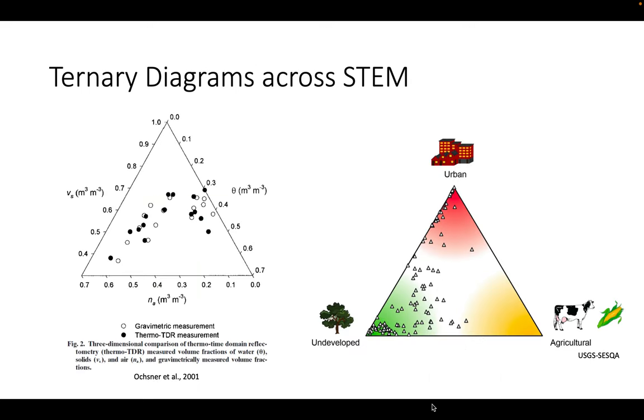Here are two examples that show the versatility of this diagram. The diagram on the left is actually from one of Dr. Ochsner's publications. This is clearly not for soil texture, but the ternary diagram maintains its base characteristics. There are three variables being plotted on an equilateral triangle with each axis labeled specifically for its given variable.